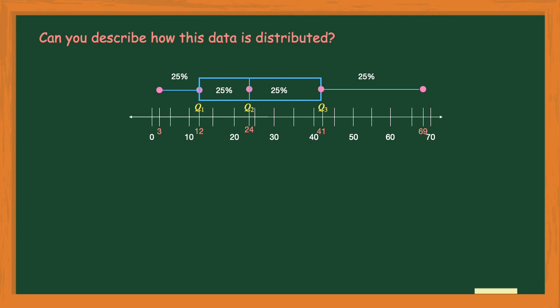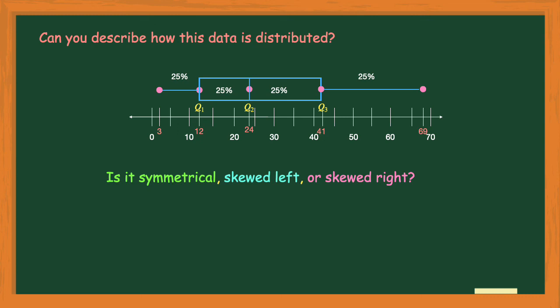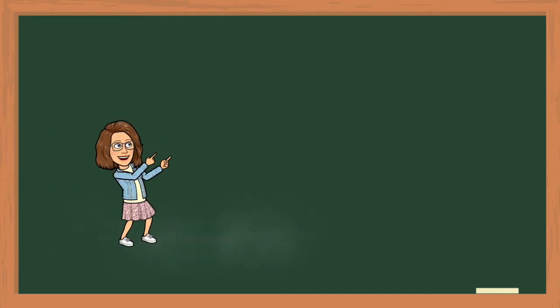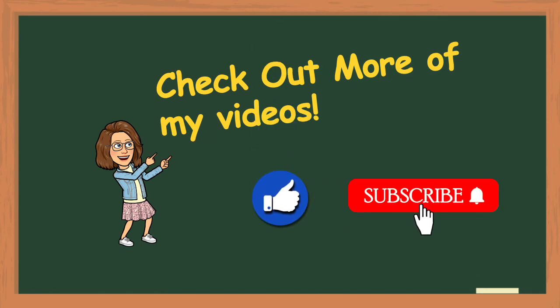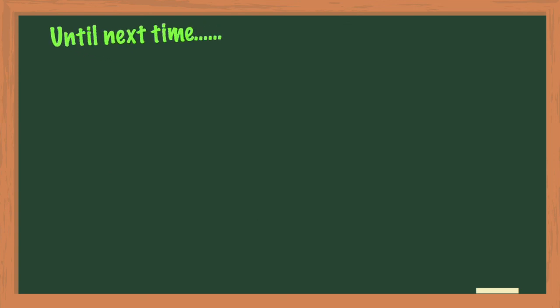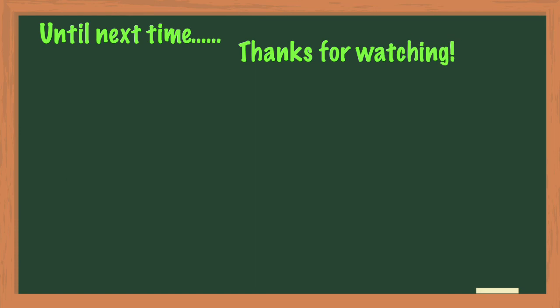Here's a bonus question: people also look at how data is distributed using three terms — is it symmetrical, skewed left, or skewed right? Do you know the answer? Leave your answer in the comments below. I really hope this video helped you out. Please check out more of my videos, subscribe, and click the notification bell so you know when my next videos come out. And if you liked this video, click that like button. Thank you so much for watching — I've got to go get some ice cream!